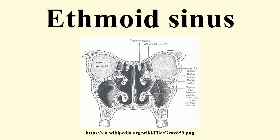The ethmoidal sinuses, or ethmoidal air cells of the ethmoid bone, are one of the four paired paranasal sinuses. They are variable in both size and number — small cavities in the lateral mass of each of the ethmoid bones — and cannot be palpated during an extraoral examination.